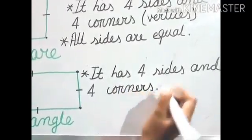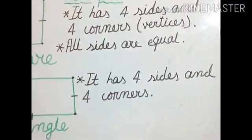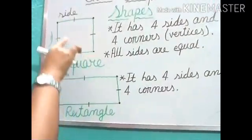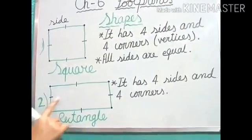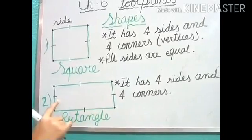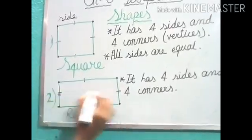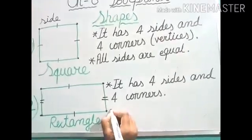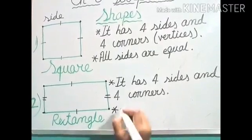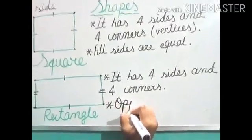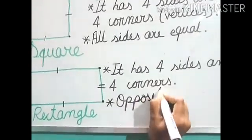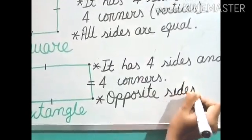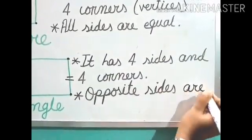Now I am not going to write vertices again because I have already written vertices. Now the next property. Here in square all the four sides are equal, but here in rectangle opposite sides are equal — like this one and this one, and this one and this one. So next property: opposite sides are equal.